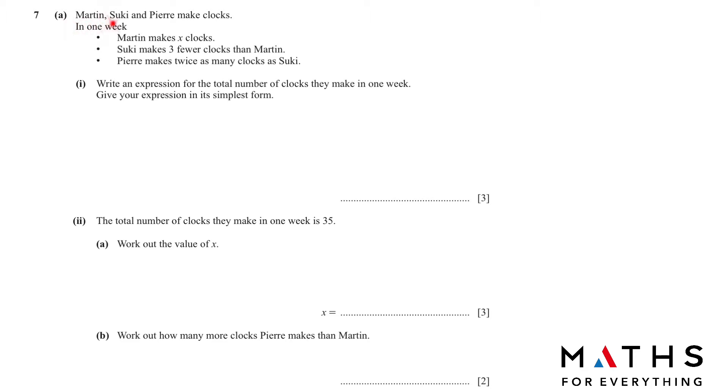Question number 7. Martin, Suki and Pierre make clocks. In one week, Martin makes X clocks. Suki makes 3 fewer clocks than Martin, so that means it is X minus 3. And Pierre makes twice as many clocks as Suki, so twice means you double the amount. So 2 times X minus 3.